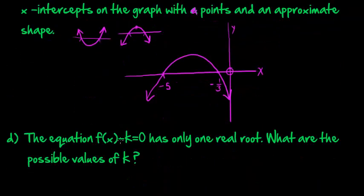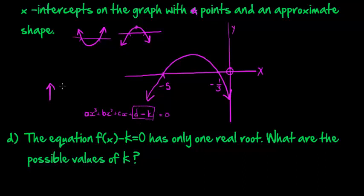The equation f(x) minus k has only one real root. So, again, we don't know what the formula is for f(x). It's ax^3 plus bx^2 plus cx plus d. Now, we're subtracting k equal to 0. Now, whenever we subtract a number from a function, it moves that function up or down. Okay.